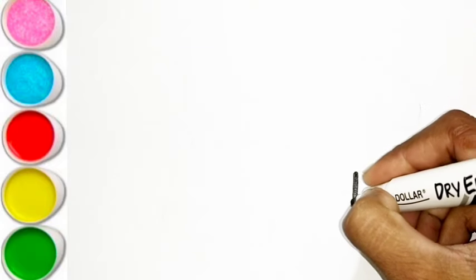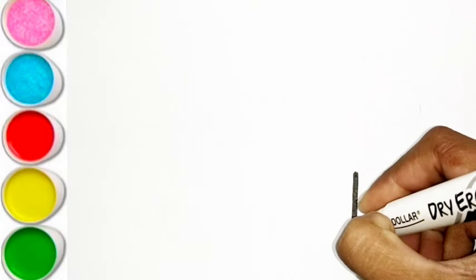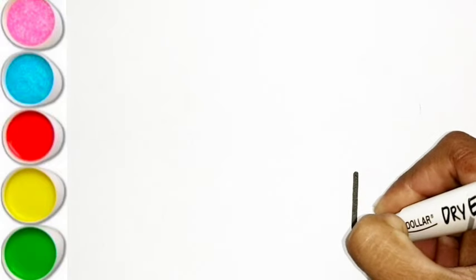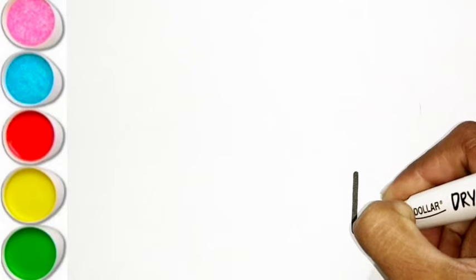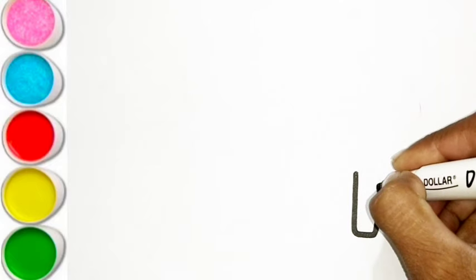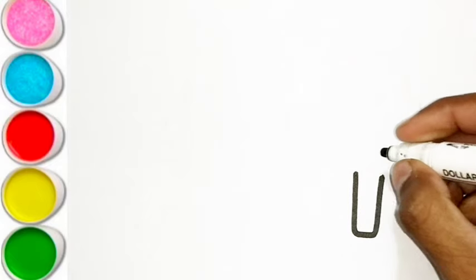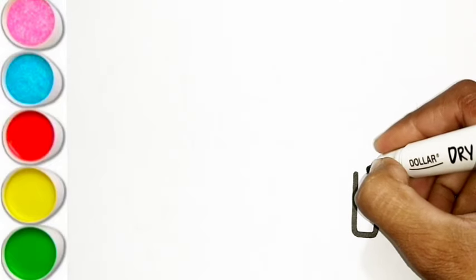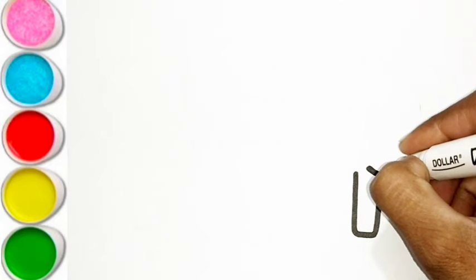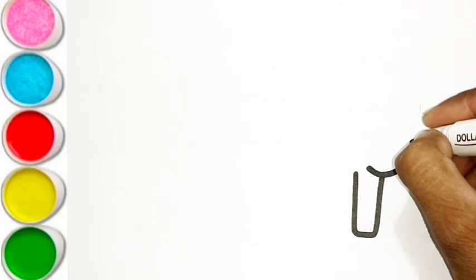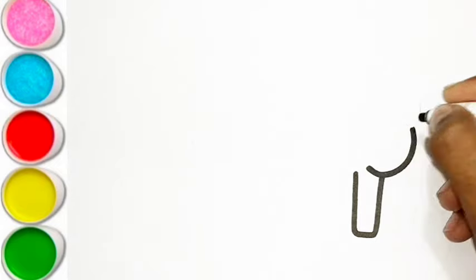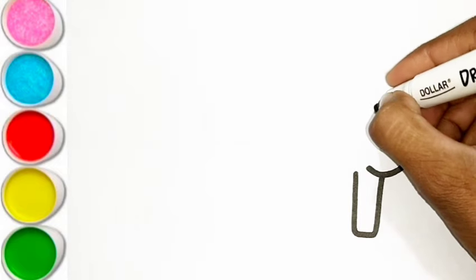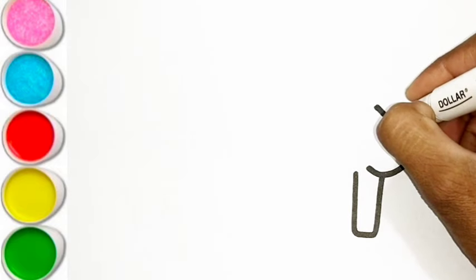A is for apple. A, a, apple. B is for ball. B, b, ball. C is for cat. C, c, cat.